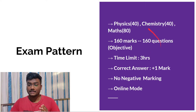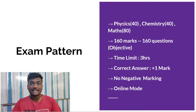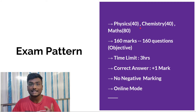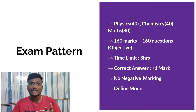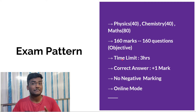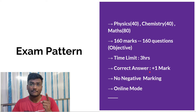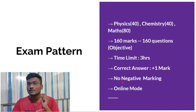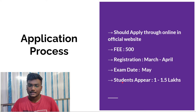The exam pattern for APMS set is similar to TSMS set: Physics 40 questions, Chemistry 40 questions, and Math 80 questions — 160 questions total, 160 marks total, objective type, with a time limit of three hours. Each correct answer carries plus one mark and there is no negative marking. The total exam will be conducted online.